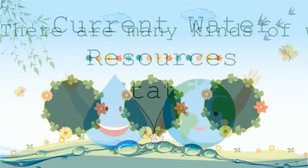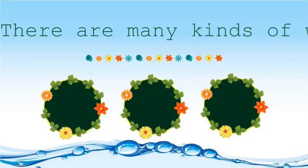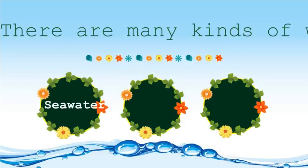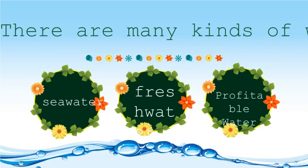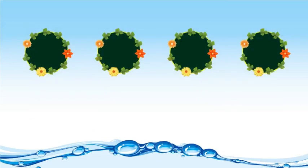Current water resources status: there are many kinds of water — sea water, fresh water, and potable water. If we look at the world as a whole, about 70 percent of the surface of the earth is covered by ocean.